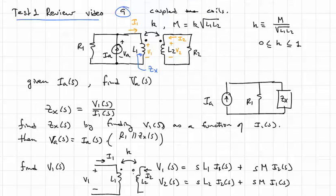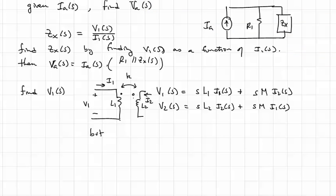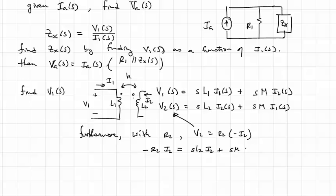Now, because the resistor R2 is connected to winding 1, there's a relationship between I2 and V2. Furthermore, with R2, we have that V2 is equal to R2 times minus I2. So we can plug that in to the second equation. And now we have minus R2 I2 is equal to SL2 I2 plus SM I1.